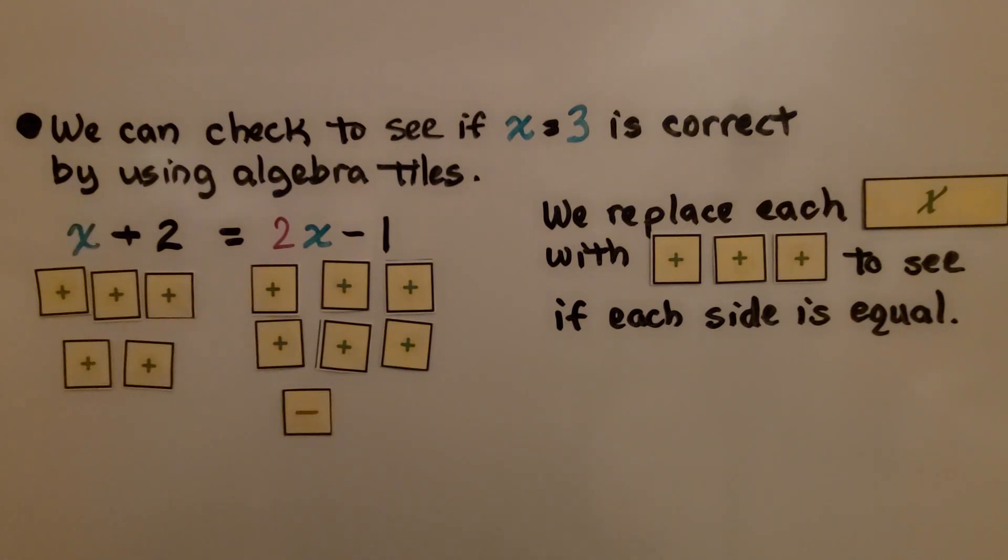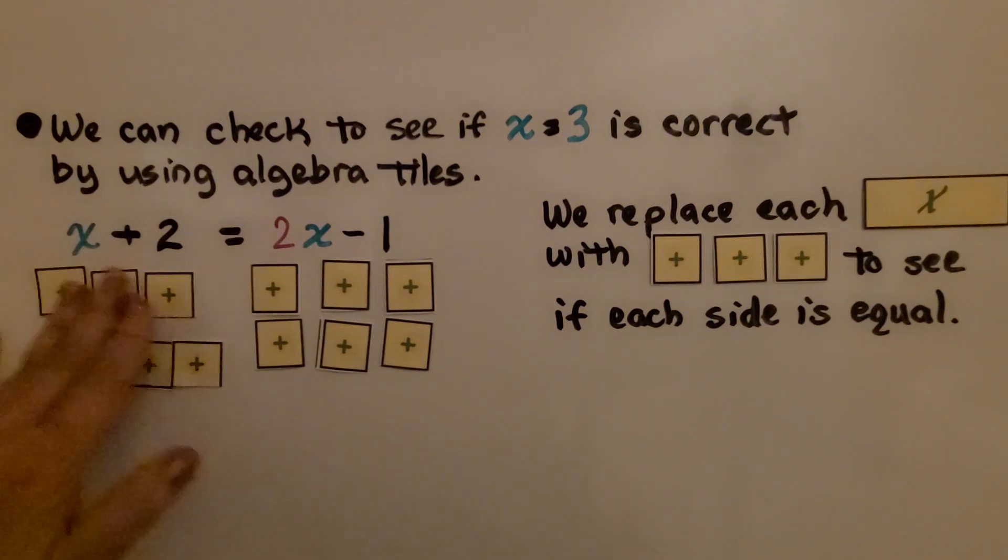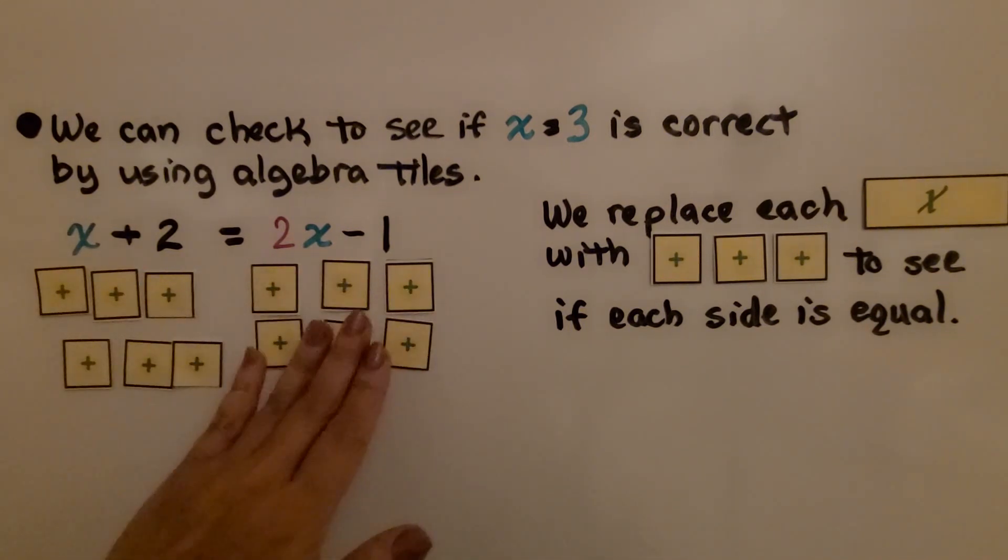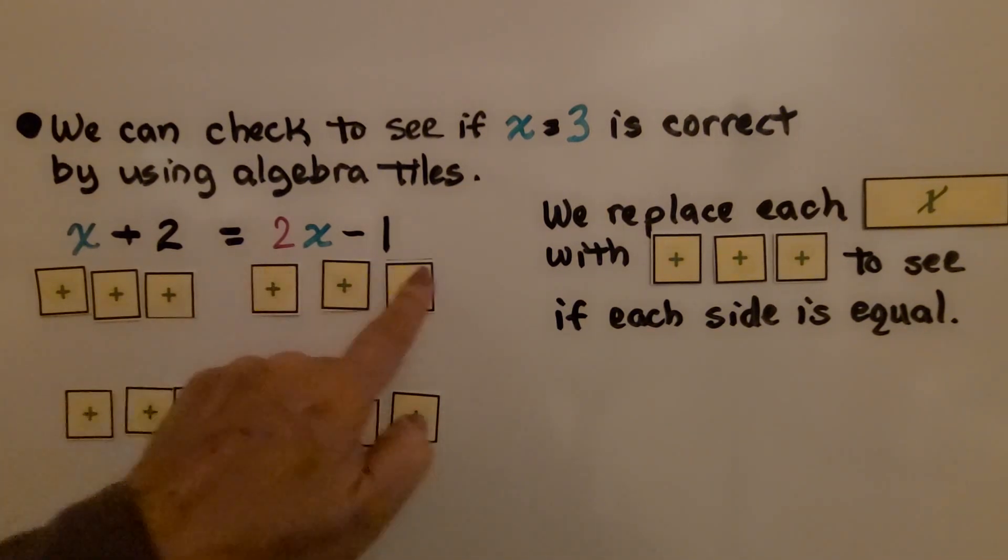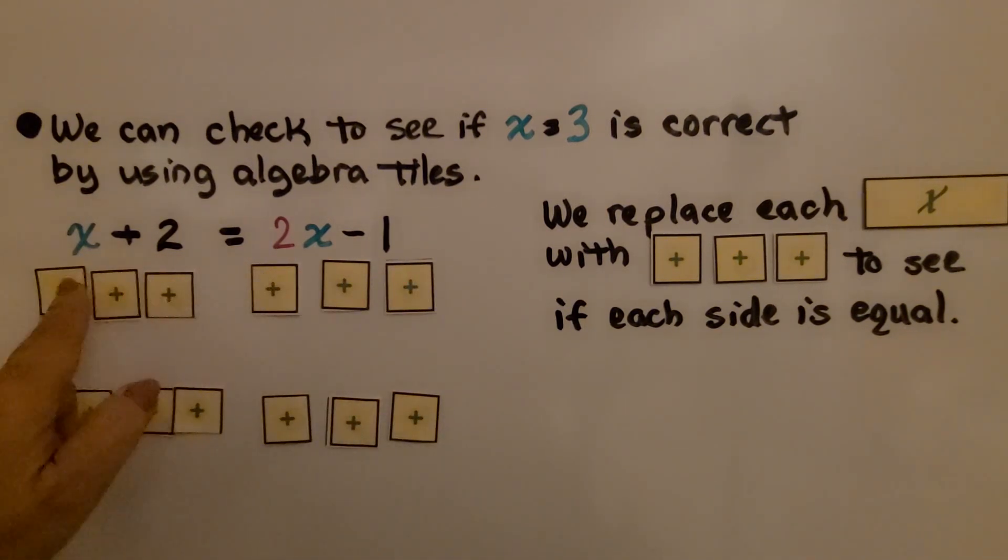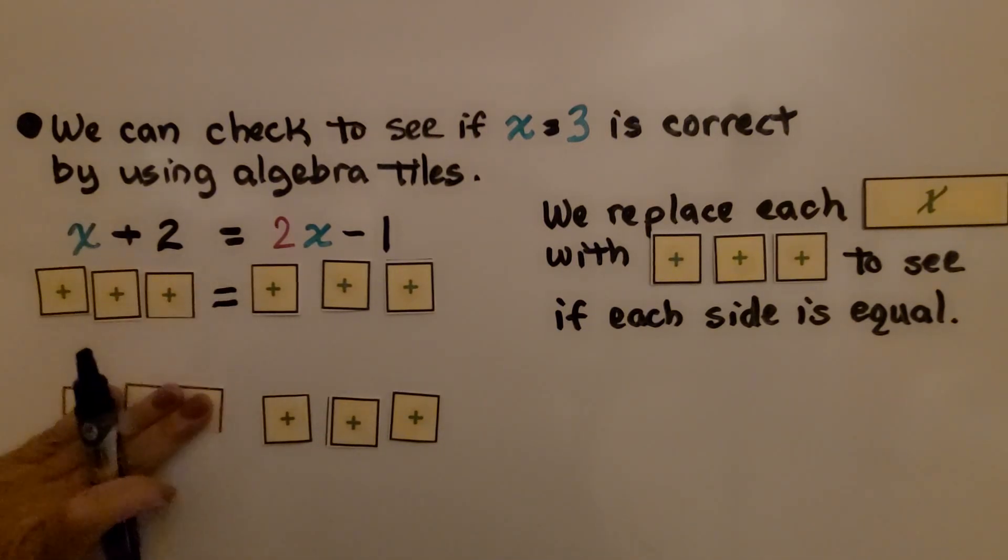We can make a zero pair by adding an x tile here and an x tile here. We have one zero pair, we remove it. Now we've got 6 equals 6, or we can say this was 1x, it's equal to 3. As long as both sides are equal, we know we did it correctly.